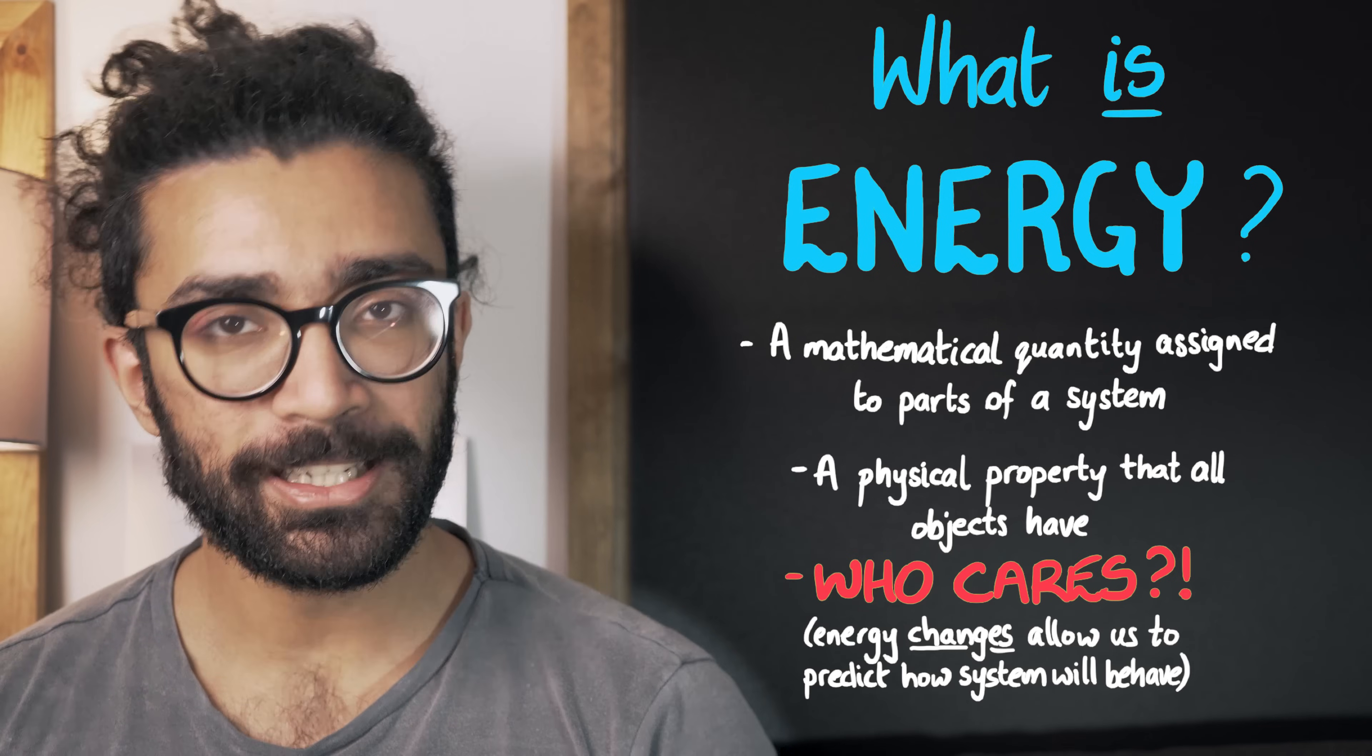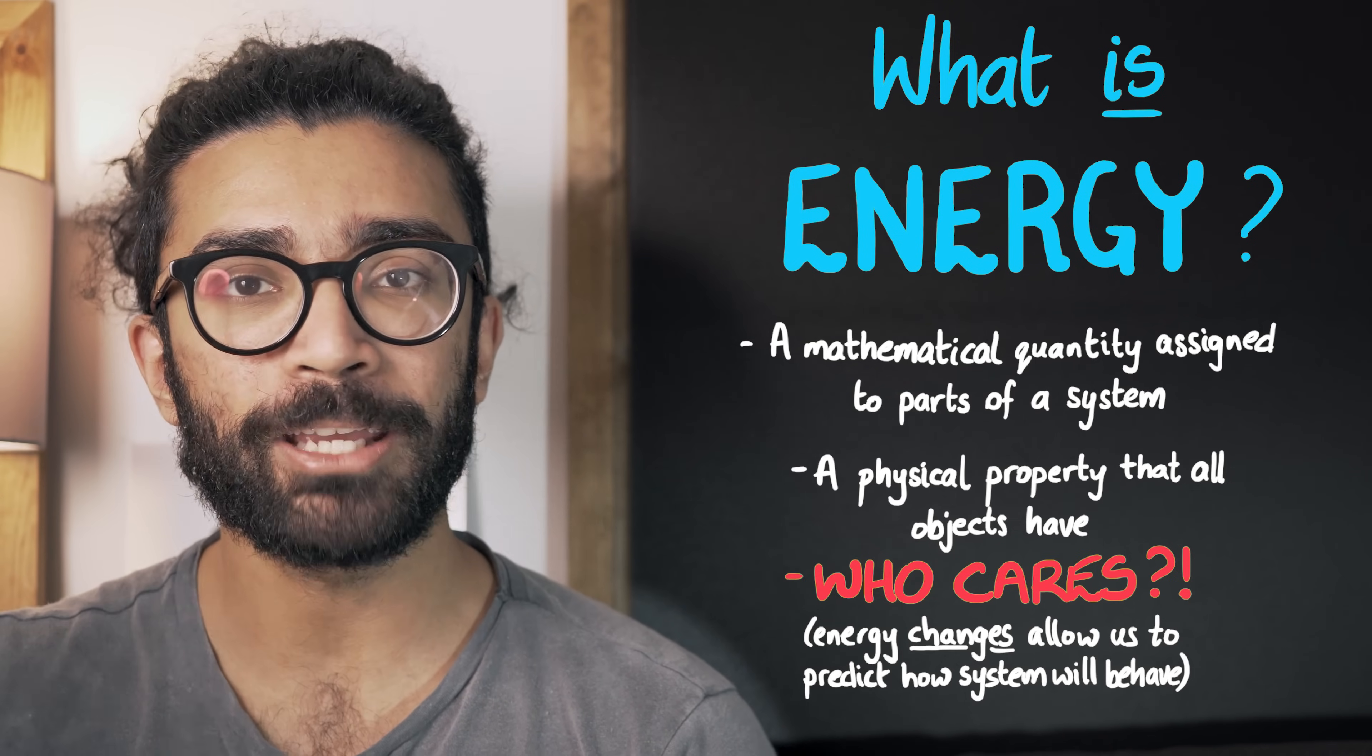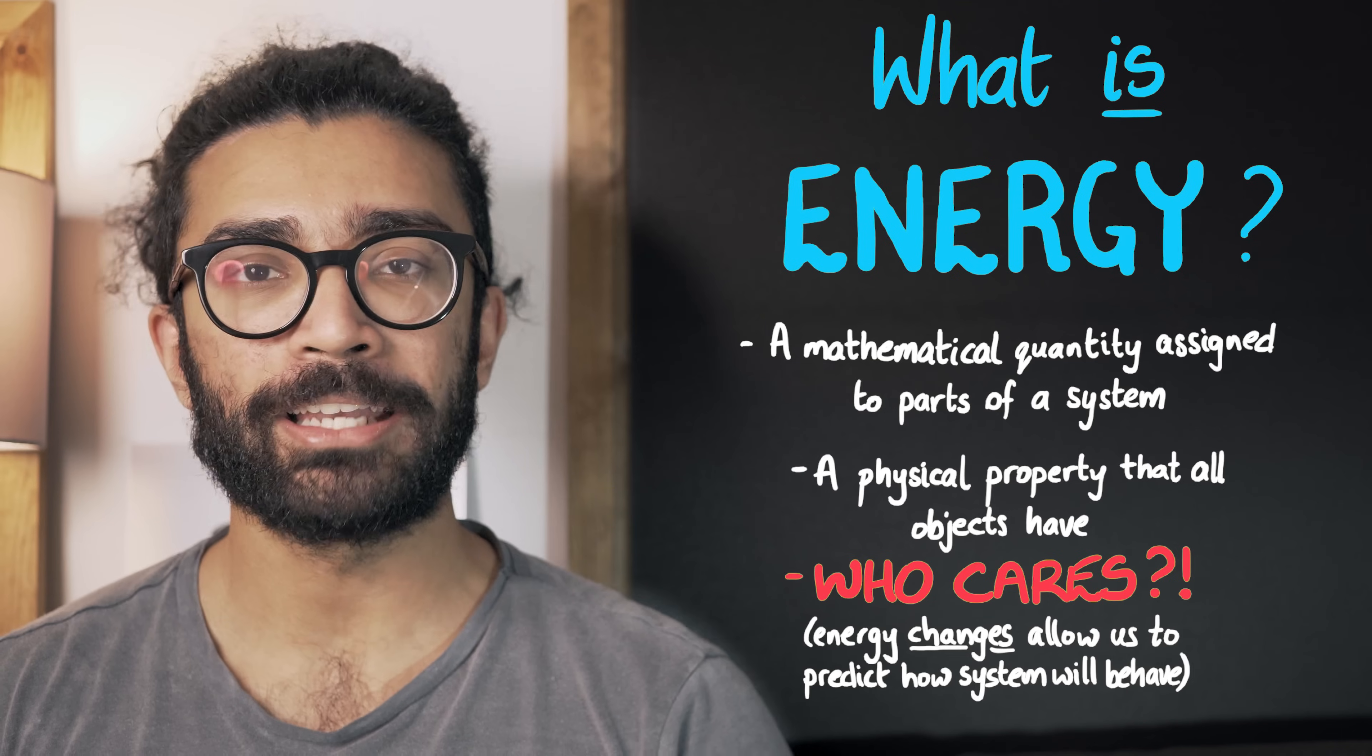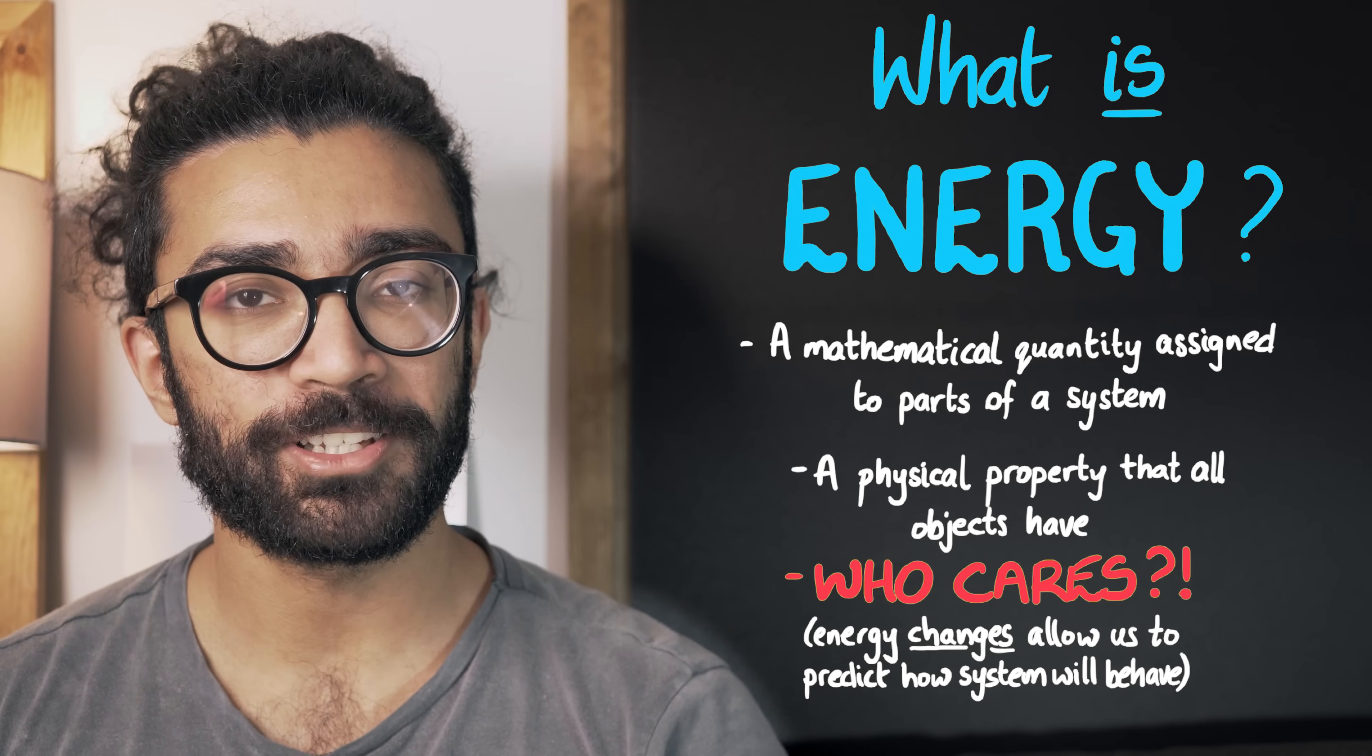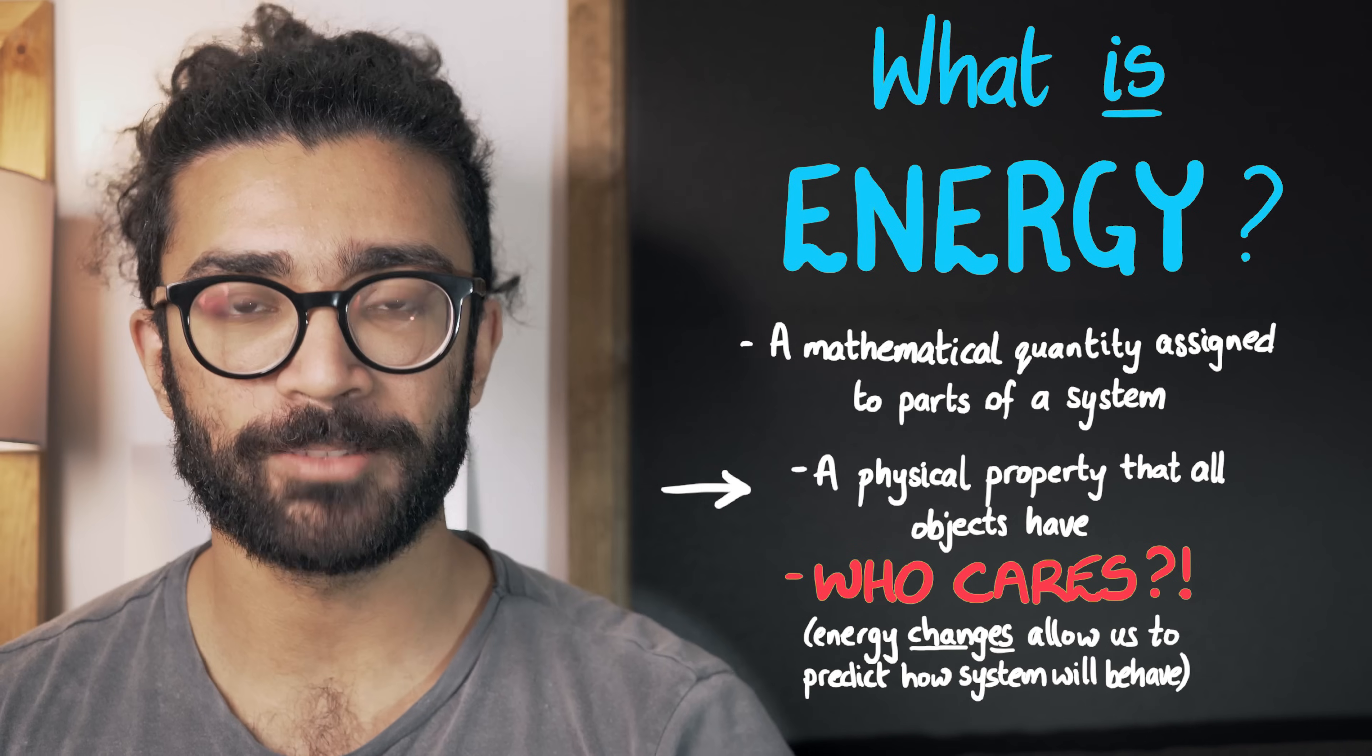The law of conservation of energy seems to hold really well in experiments that we've done so far. And as a result of this, we can use it to make predictions about how our system should behave. If we can measure something that allows us to work out how energy has changed in one part of a system, then we can predict how another part of the system should behave, for example.